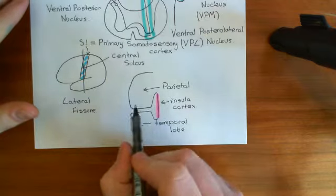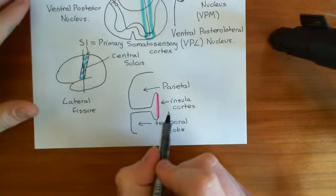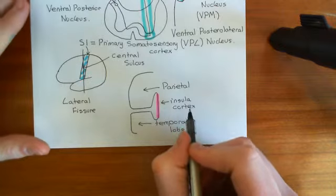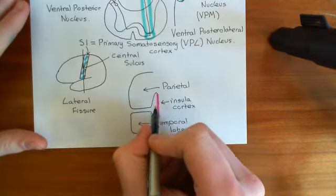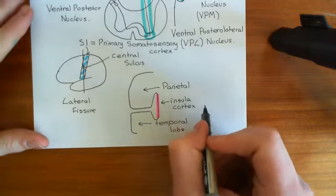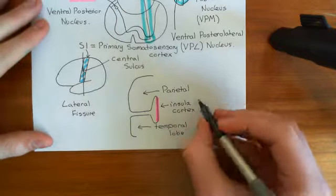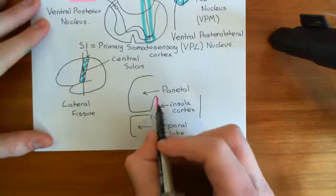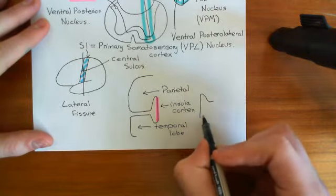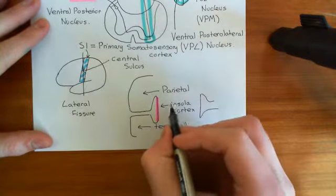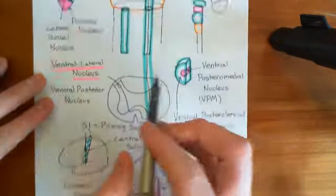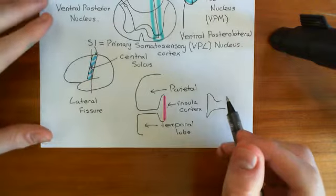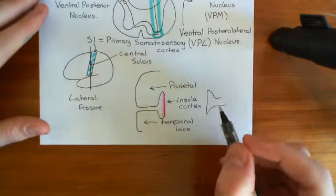This insular cortex is going to receive projections from the ventral posterolateral nuclei. The ventral posterolateral nucleus on the left side will project to the left insular cortex and the one on the right side to the right insular cortex. This seems to be involved in the conscious experience of pain.